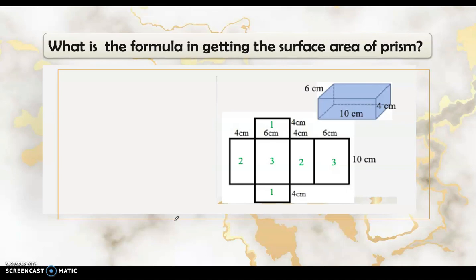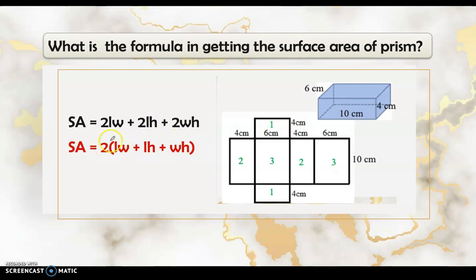Therefore, the formula for the surface area of a rectangular prism is: 2 times length times width, plus 2 times length times height, plus 2 times width times height. We can simplify this as 2 times the sum of (length × width + length × height + width × height).